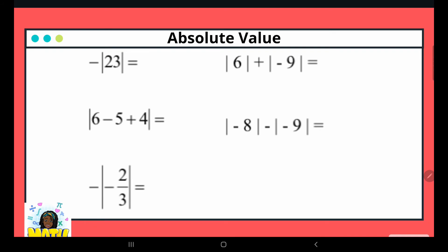Now let's try examples that require a little more work. Here you see 23 inside the absolute value bars, but there's a negative sign on the outside. The absolute value of 23 is 23, but the negative sign outside the bar doesn't change — I simply bring it over to my answer.